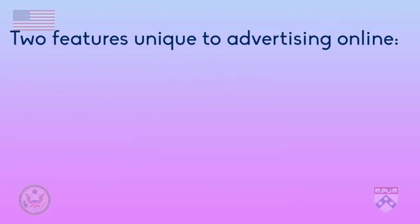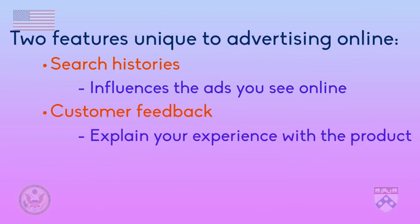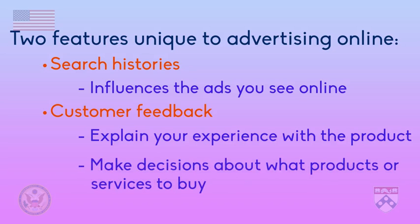To summarize, the two features that are unique to advertising online are search histories and customer feedback. Your search history influences what ads you see when you are online. Customer feedback allows you to explain your experience with a product and helps you make decisions about what products or services to buy. In the next video, we'll put together everything we've learned in this unit to answer the five questions we must ask ourselves when analyzing media messages, including advertisements.